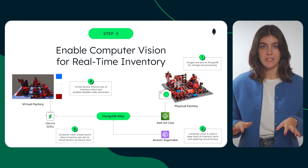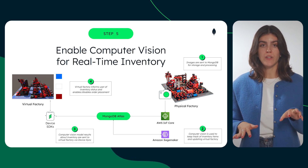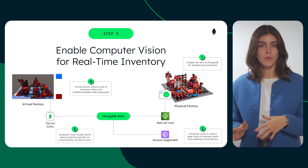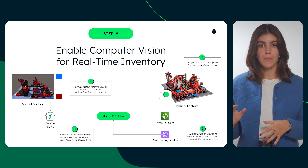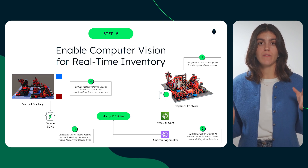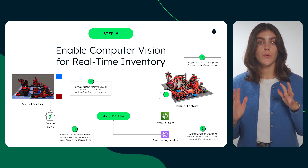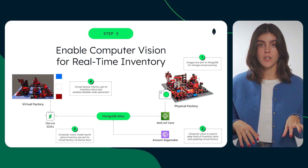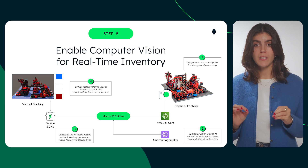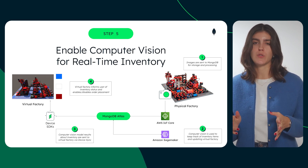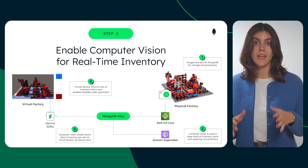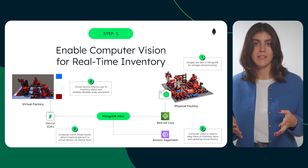Once we have the data modeled and connectivity established, our last step is to run event-driven analytics on top of our developer data platform, powered by computer vision and AI. To analyze inventory status in the physical factory, images are captured within the warehouse and transmitted to MongoDB, where they get stored and processed. We use computer vision techniques to drive inventory monitoring and get quick results. The results from this computer vision analysis are then transmitted to the virtual factory through Device Sync. If the user attempts to order a piece in the virtual factory that is not in stock, they will immediately get a notification from the physical factory about inventory status. This dynamic interaction between physical and virtual components enhances the overall user experience and is facilitated by the capabilities of MongoDB Atlas and AI integration.